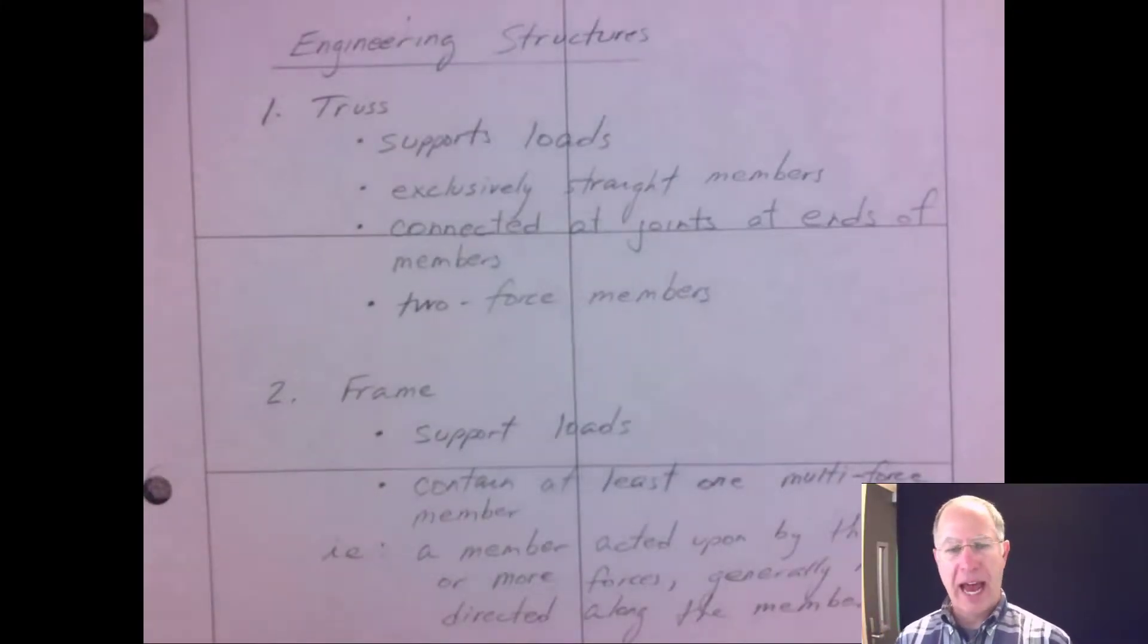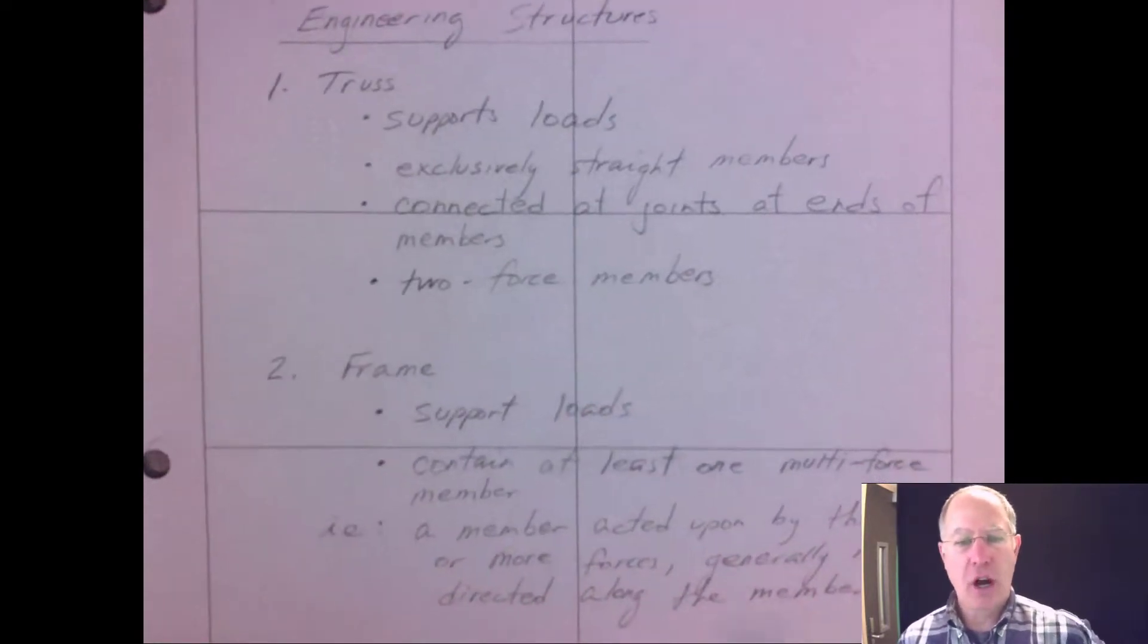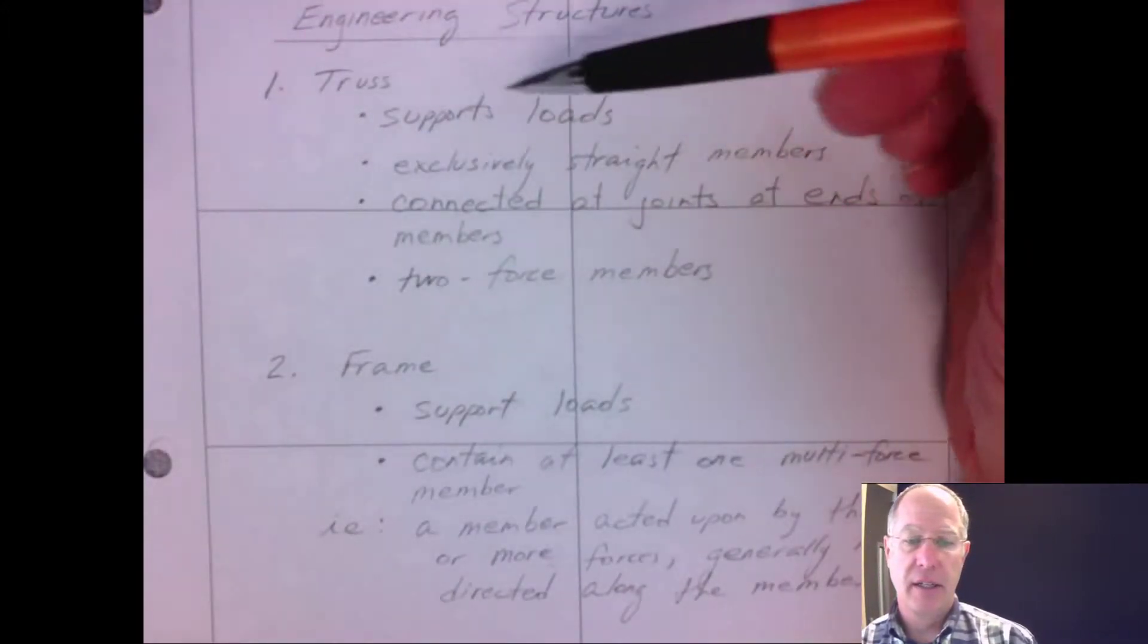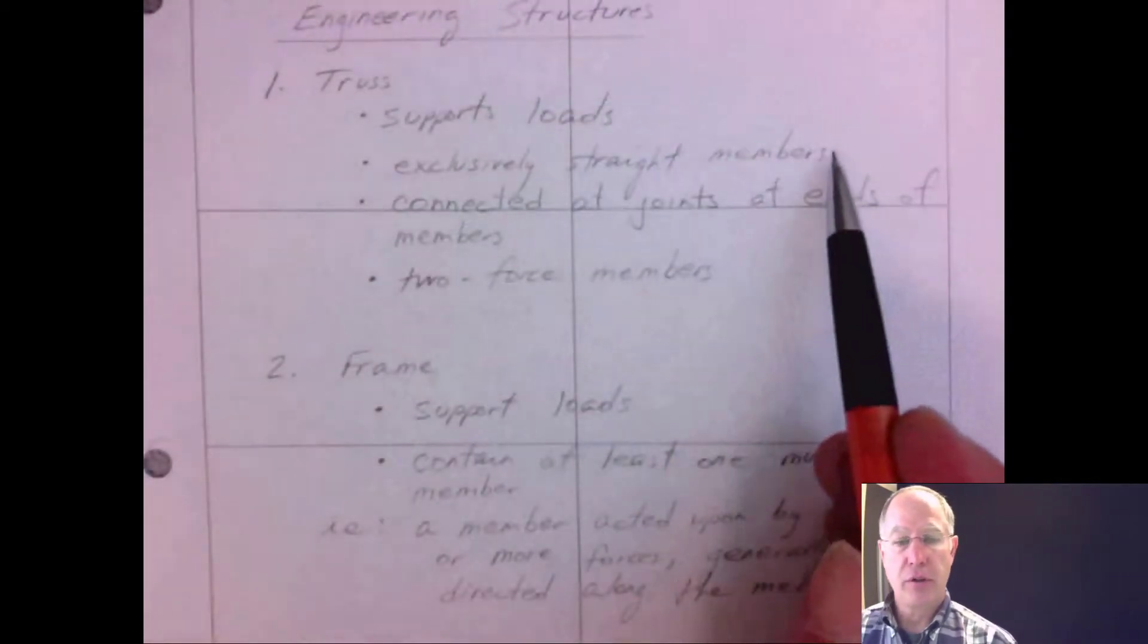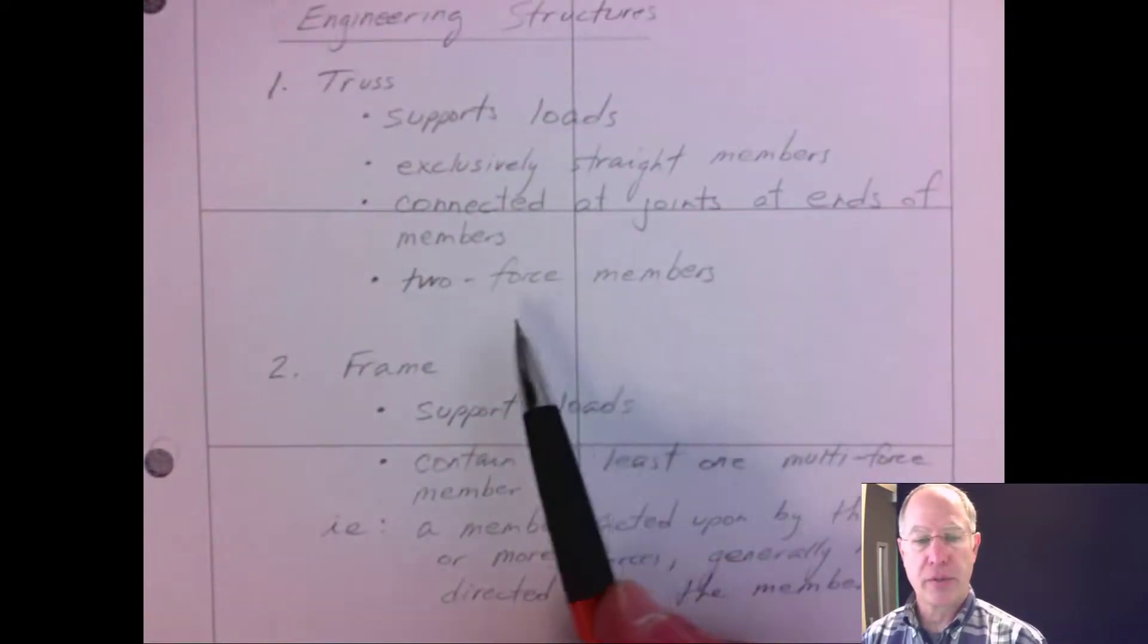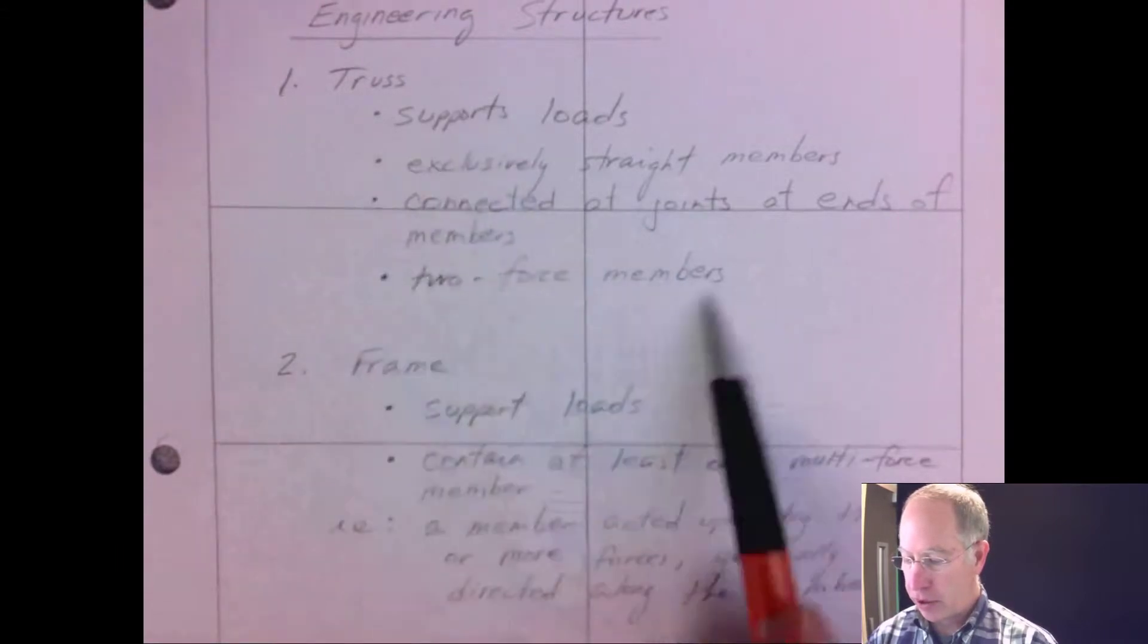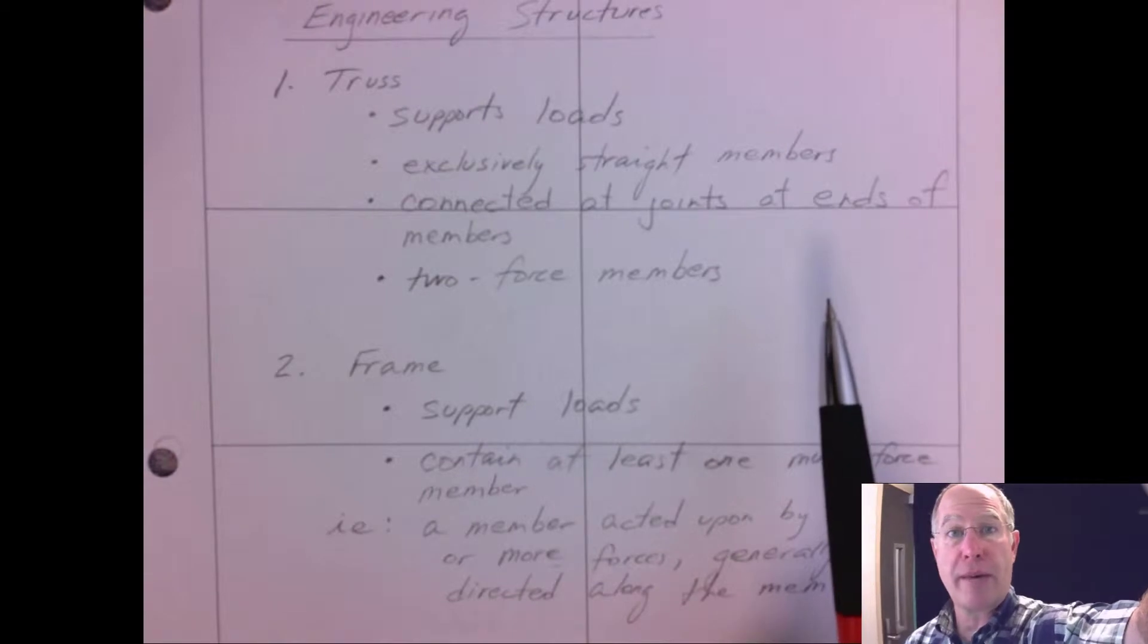Okay, welcome back to statics. We've talked about trusses. Some characteristics about a truss: it's used to support loads, composed of straight members, two-force members, and they're connected at joints at the end of members. Those are some general characteristics of trusses, but there's also frames and machines.